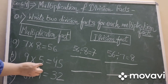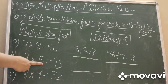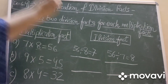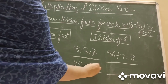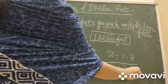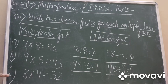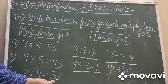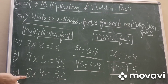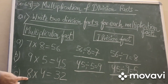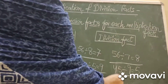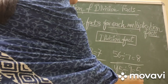Part B: 9 into 5 is 45. So 45 divided by 5 equals 9, and 45 divided by 9 equals 5. Part C: 8 into 4 is 32. So 32 divided by 4 equals 8, and 32 divided by 8 equals 4. Like this, you have to write down the division facts for each multiplication fact.